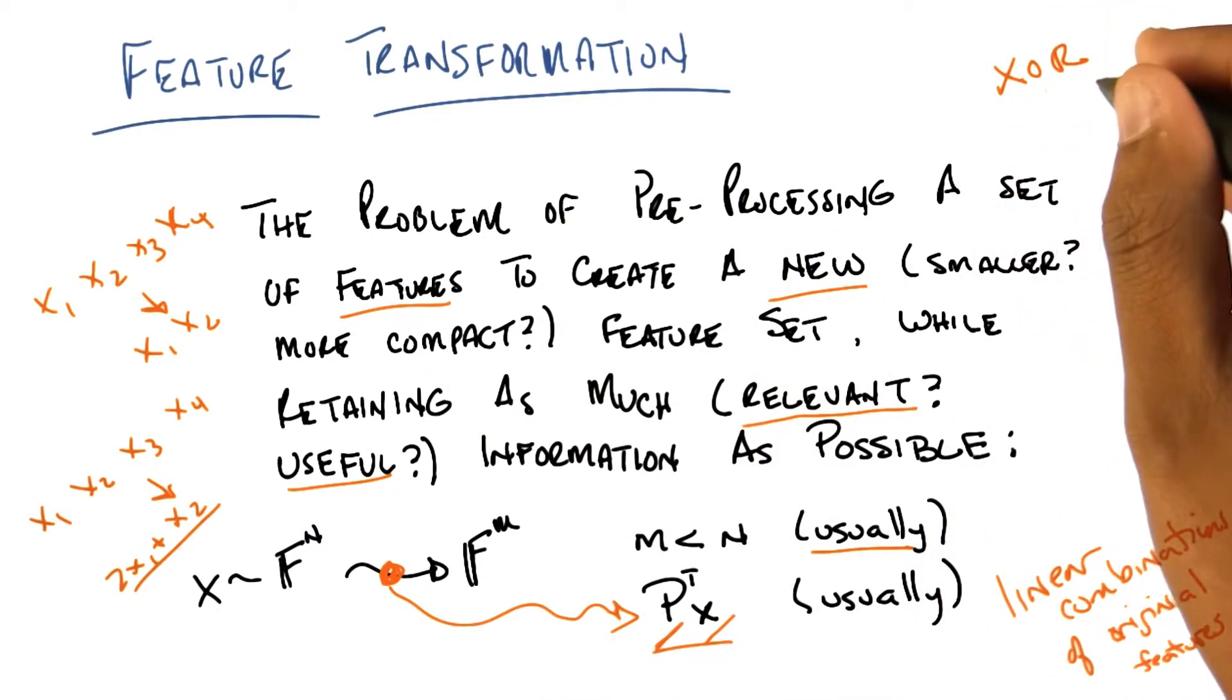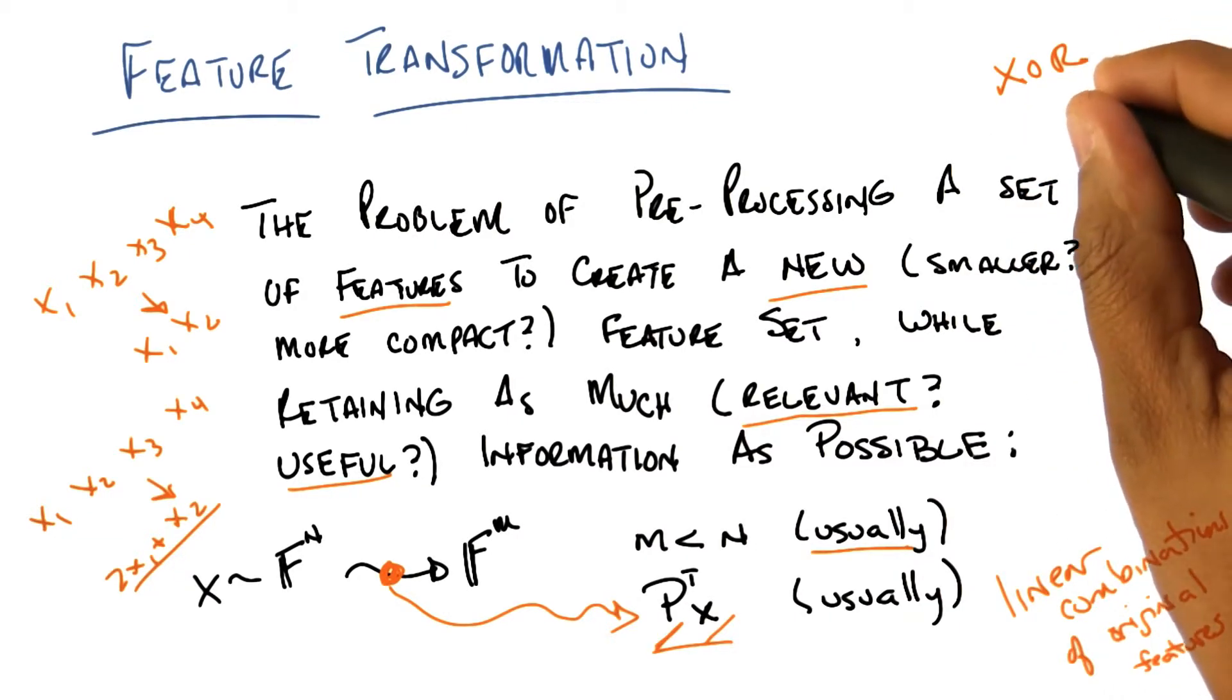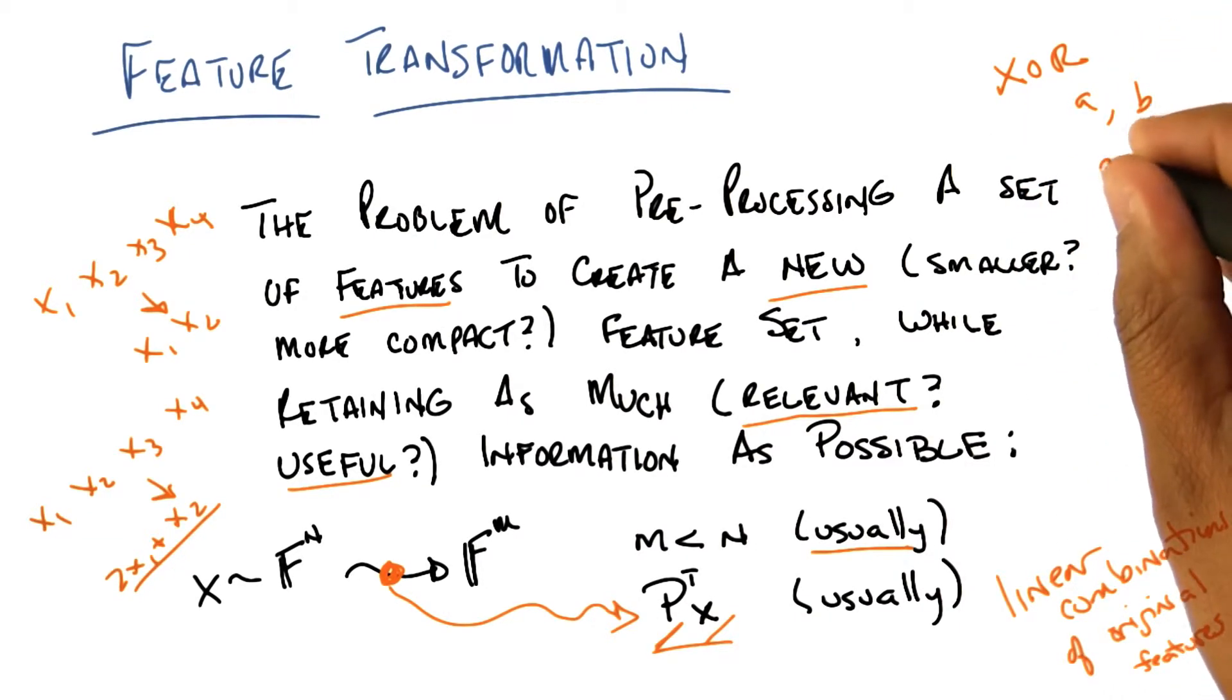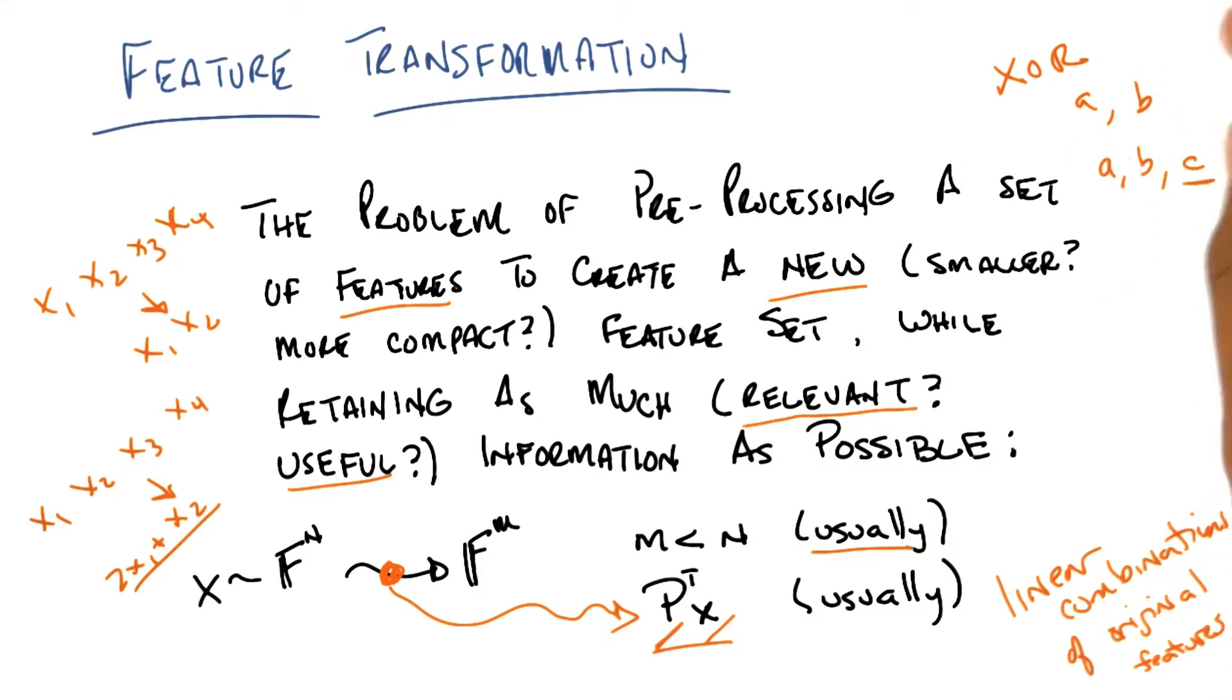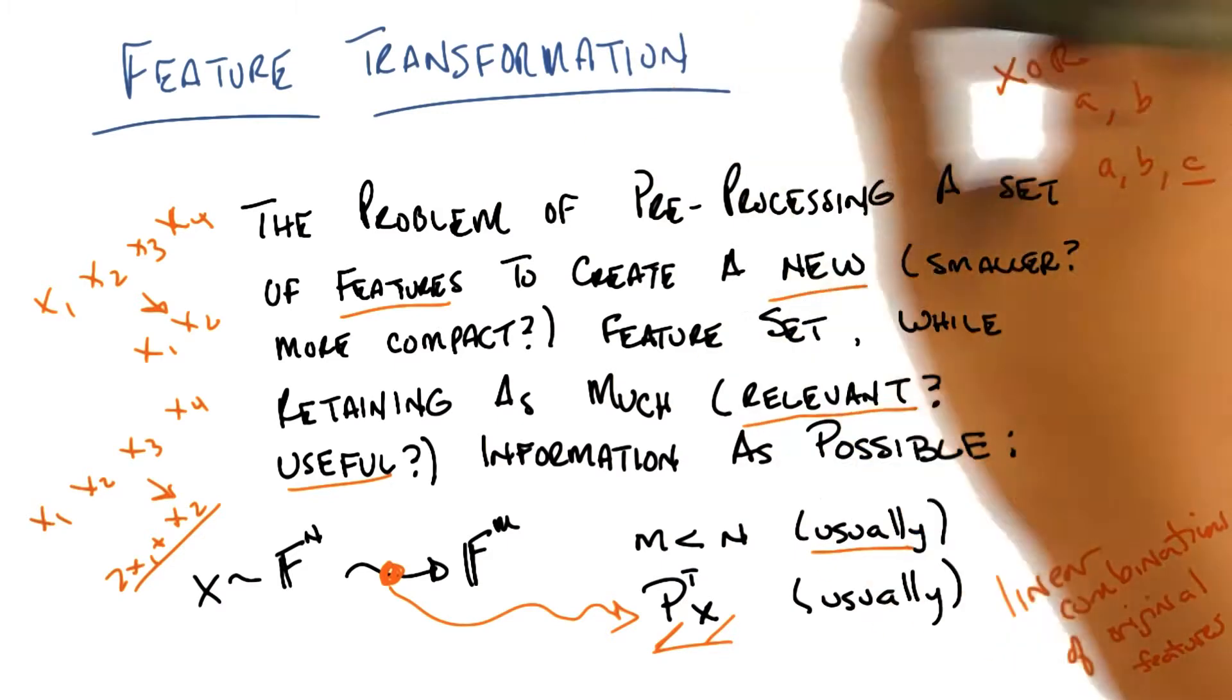Oh, right. What we effectively did is we showed that we could project the original two-dimensional space into what looks like a three-dimensional space, where the third dimension was a combination of the first two. And then you could actually do it with a linear separator. Ah, but that wasn't a linear transformation. That was a non-linear transformation. Right, because we're talking about Boolean variables. Yeah. But in the end of the day, it was still a kind of feature transformation.